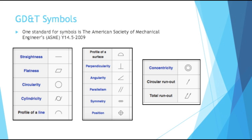Here are some examples of symbols you might see on a GD&T print. There is straightness, which is a flat line. You have flatness, which is in reference to a surface. You have circularity, which is 2D, a lot like straightness. Then you have cylindricity, which is more of a plane, like flatness. So there are a lot of similarities there.